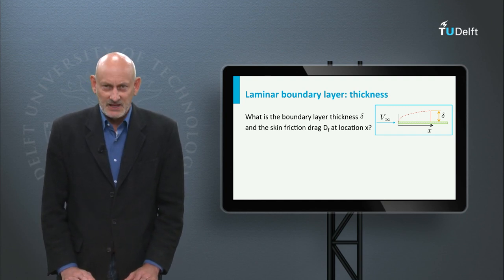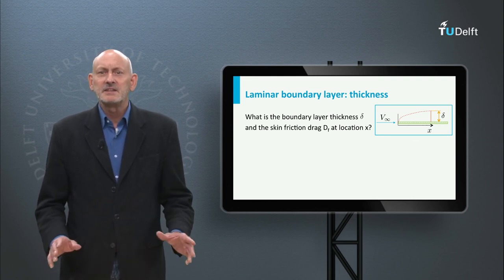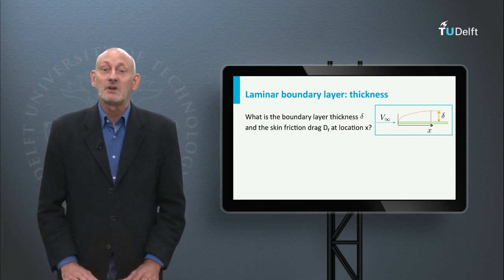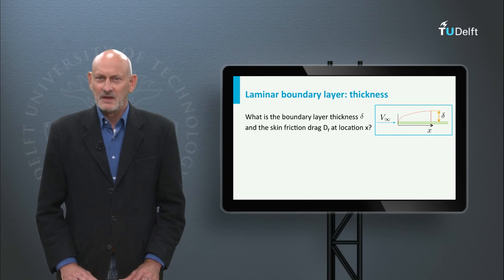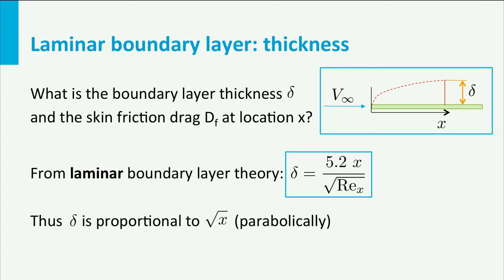With his boundary layer theory, Prandtl, together with his former student Blasius, was able to simplify the Navier-Stokes equations in such a way that they could get analytical results for a laminar boundary layer. From this theory, we find that the local boundary layer thickness at a station x from the leading edge is equal to 5.2 times x divided by the square root of the local Reynolds number. So starting at the leading edge of the plate, the boundary layer in fact develops parabolically with the square root of x.